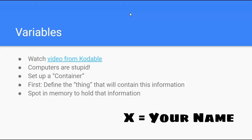So let's talk a little bit more about variables. Computers are stupid. Computers don't know what to do unless you tell them exactly step by step what to do. That's why programming is so difficult.